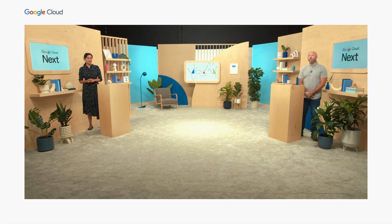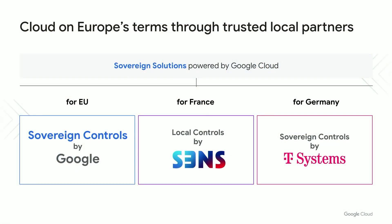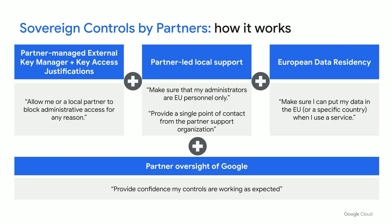For situations where there's a strong need to have less reliance on a software provider, our hosted cloud offering will support software sovereignty and allow for air-gapped and disconnected operations without provider software or support. We do this in conjunction with well-trusted local partners. As part of our initiative to deliver cloud on Europe's terms, we have worked with SENS in France and T-Systems in Germany to deliver sovereign solutions powered by Google Cloud. Sovereign controls allow you to keep your data in a given geography with data residency, store and manage encryption keys outside of Google's infrastructure through external key management with key access justifications, and our European support feature ensures that only EU persons support customers when they need help.